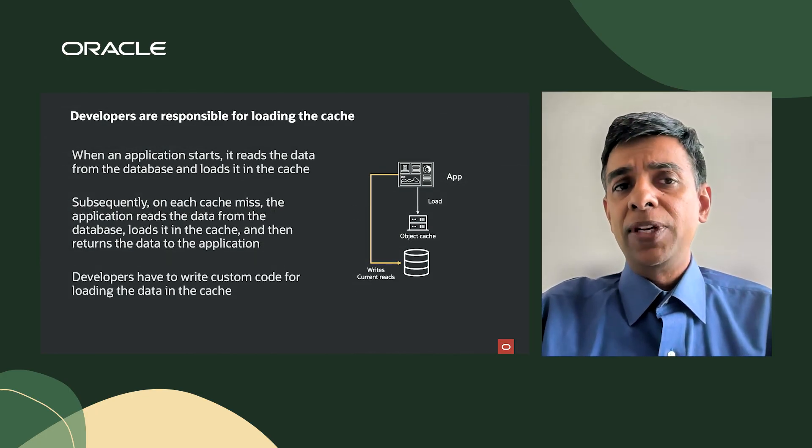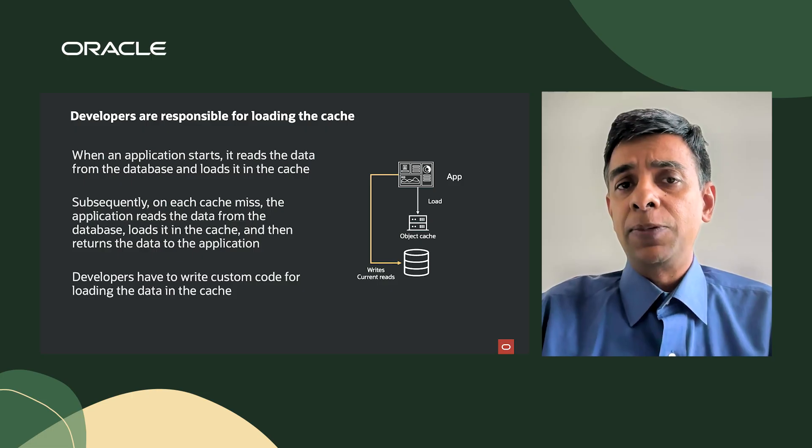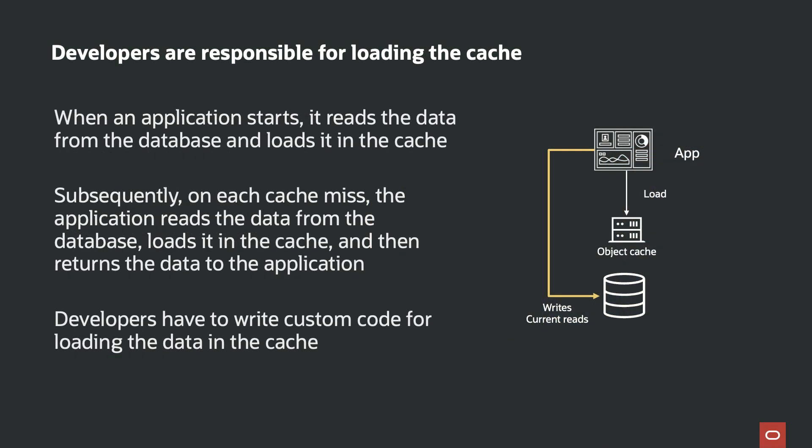In conventional object caches, developers are responsible for loading the cache. When an application starts, it reads the data from the database and loads it in the cache. Subsequently, on each cache miss, the application reads data from the database, loads it in the cache, and returns the data to the application. Developers often have to write custom code for loading data in the cache.